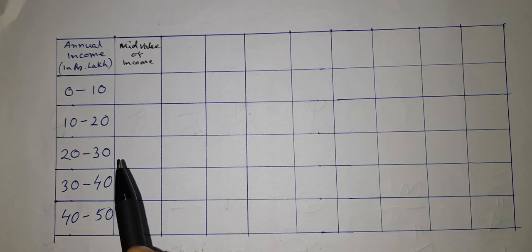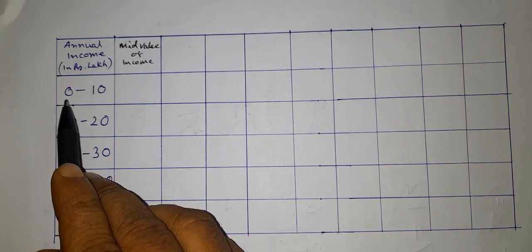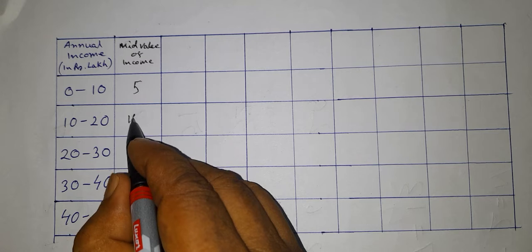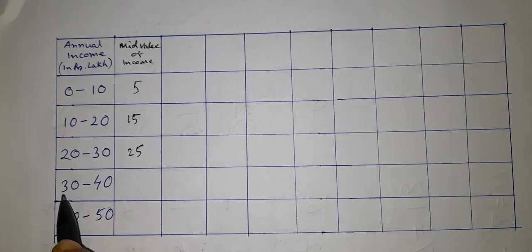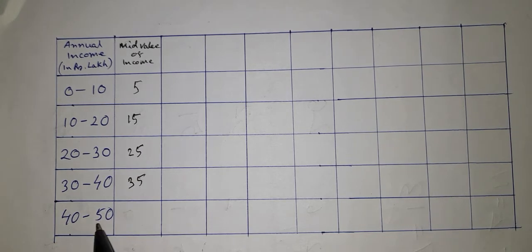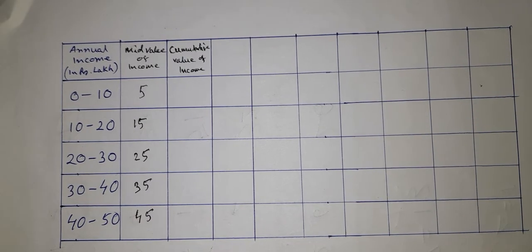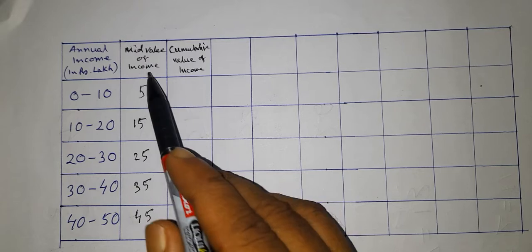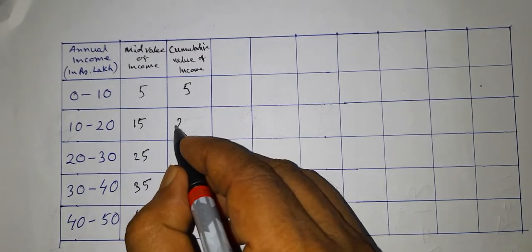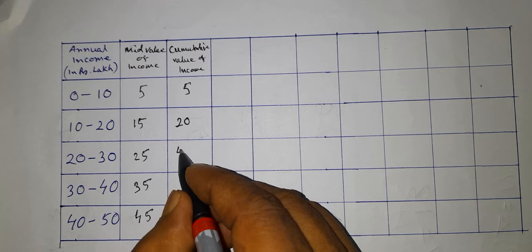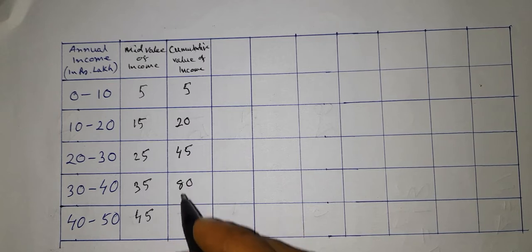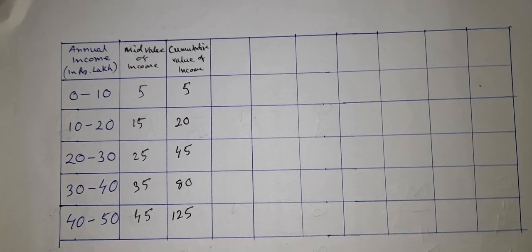First of all, we take the mid value of income: the mid value of 0–10 is 5, 10–20 is 15, 20–30 is 25, 30–40 is 35, and 40–50 is 45. Now we take the cumulative values of these mid values: 5, then 5+15=20, then 20+25=45, then 45+35=80, and finally 80+45=125.